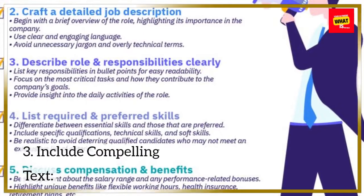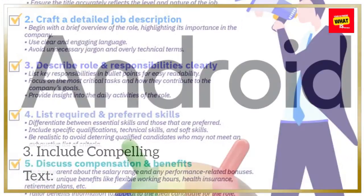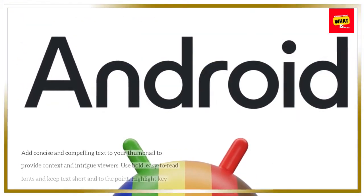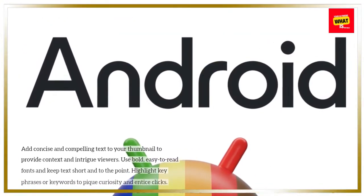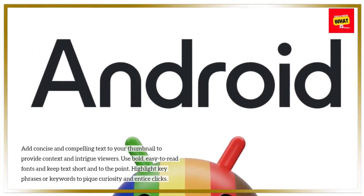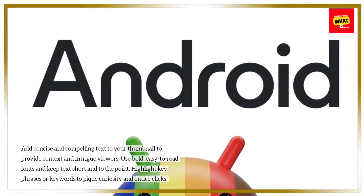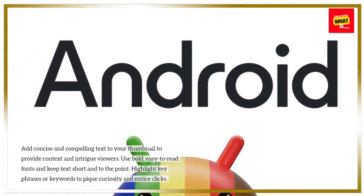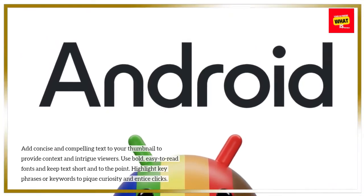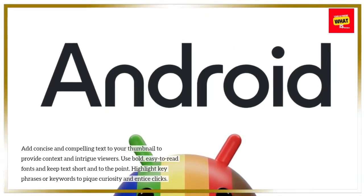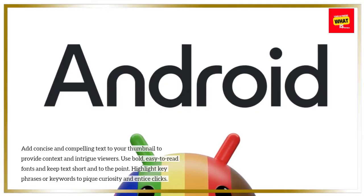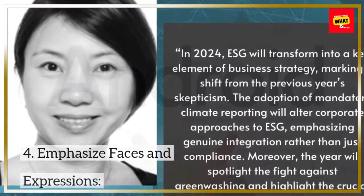3. Include Compelling Text. Add concise and compelling text to your thumbnail to provide context and intrigue viewers. Use bold, easy-to-read fonts and keep text short and to the point. Highlight key phrases or keywords to pique curiosity and entice clicks.